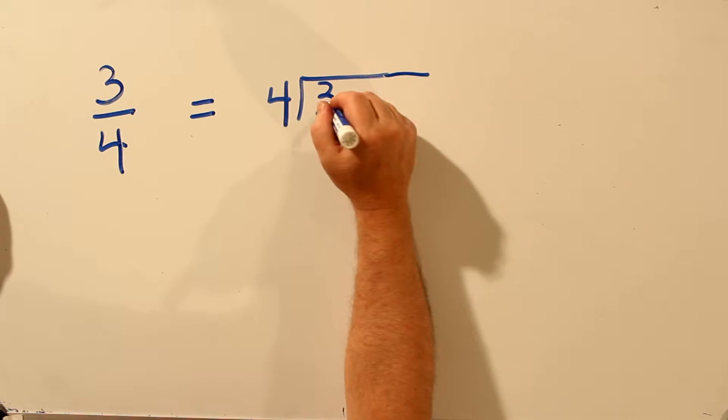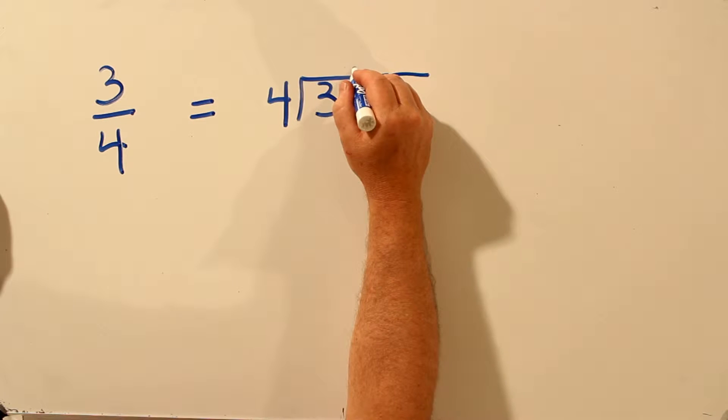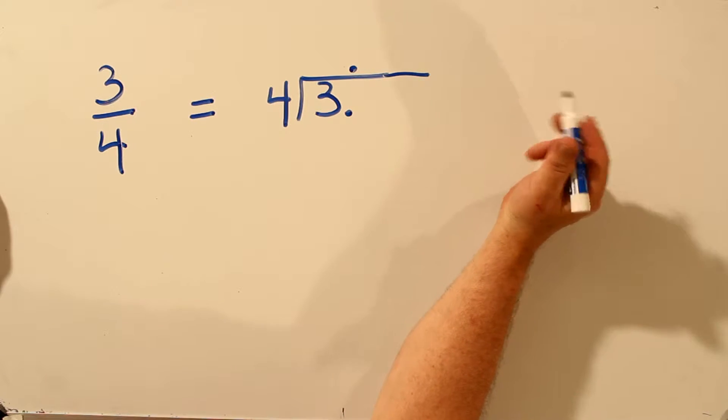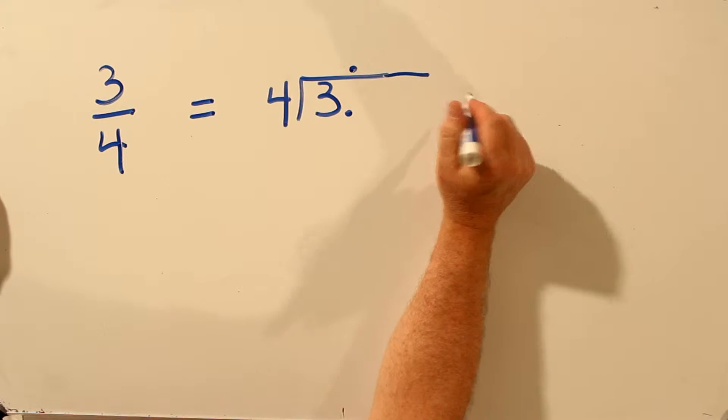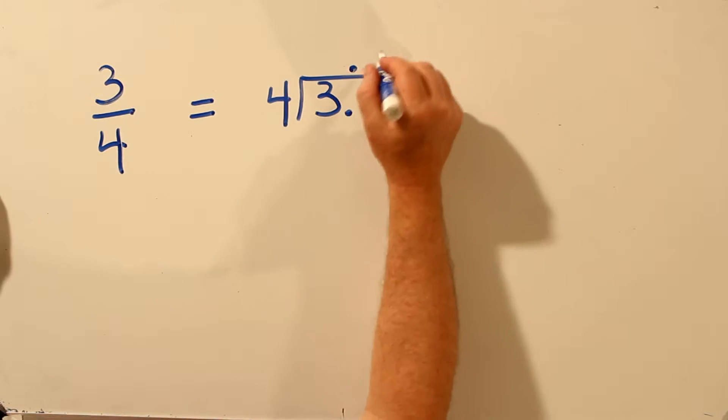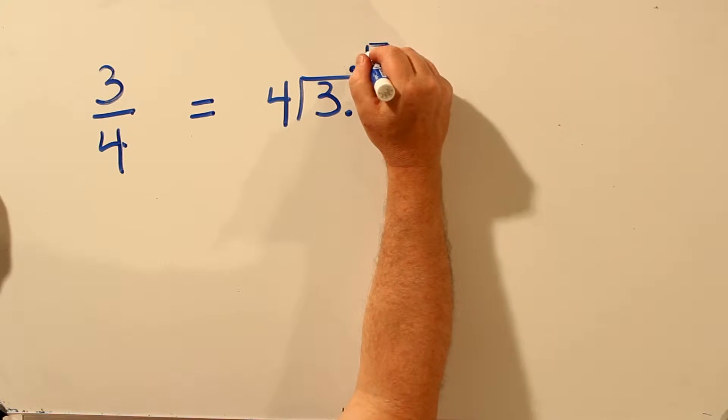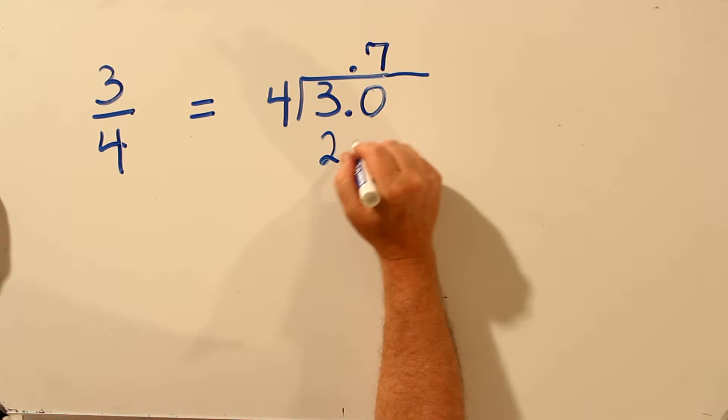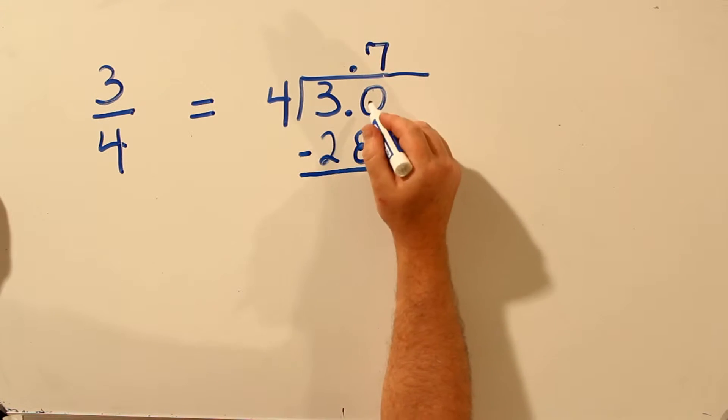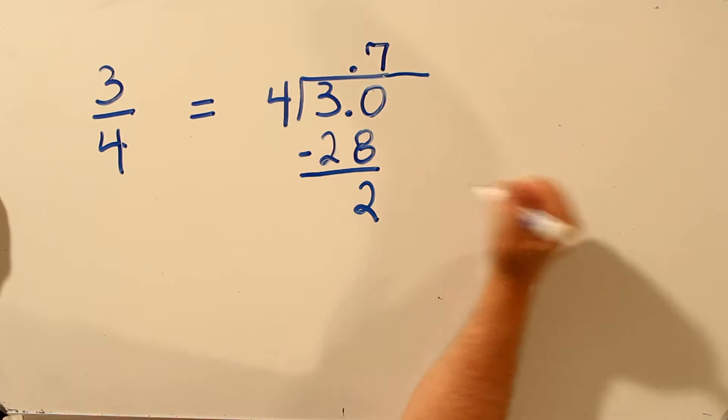Now, 4 doesn't divide into 3, so we're going to have a decimal place. But that's what we're trying to do, is convert this fraction to a decimal. So we'll put a 0 there. 4 does go into 30, 7 times. And we multiply 7 times 4, is 28. Subtract 28 from 30. We get 2.